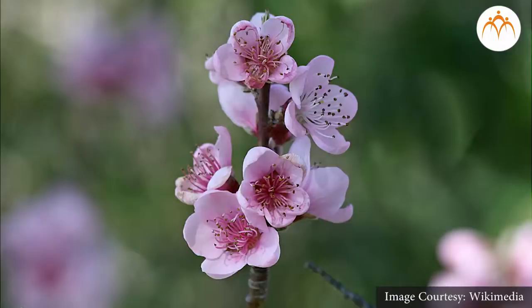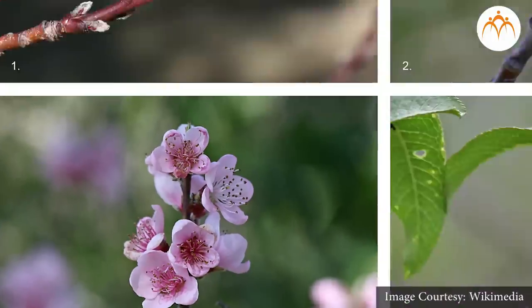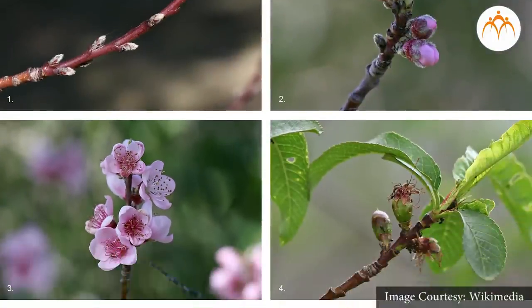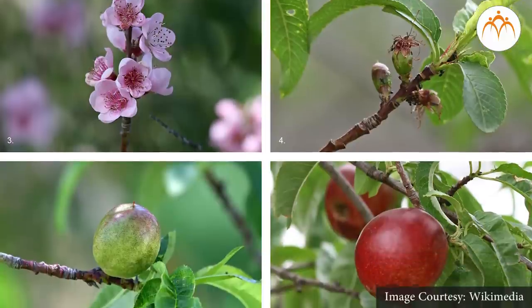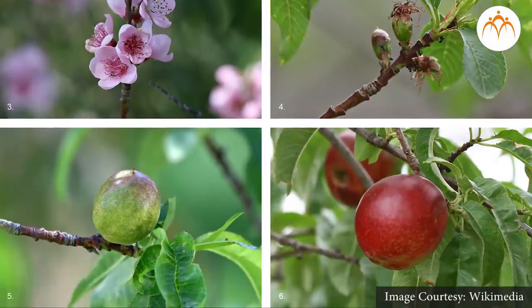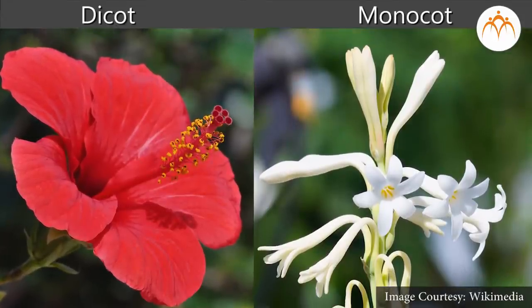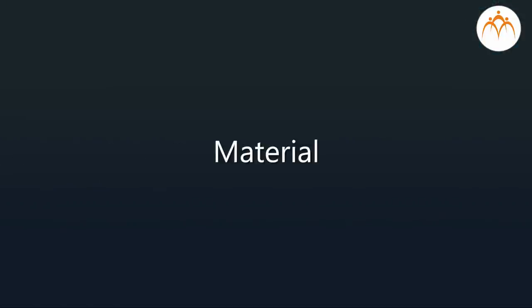The last and highest evolved group of kingdom Plantae is angiosperms. This group includes plants that produce flowers and seeds, and seeds are inside the fruits. Angiosperms are further divided into dicotyledons and monocotyledons. In this practical you will be observing one specimen each from these groups to understand differences between them.